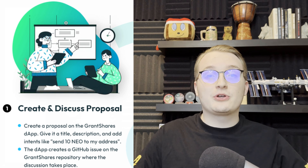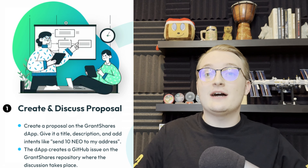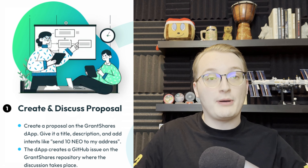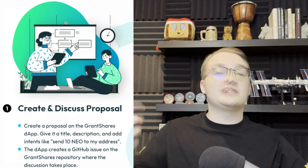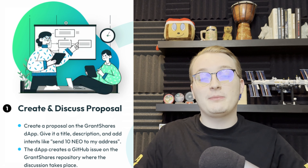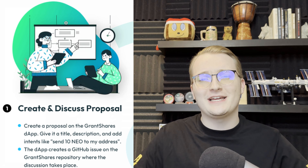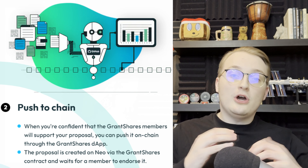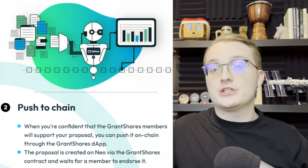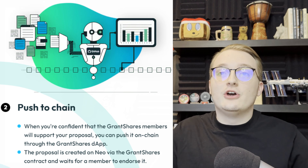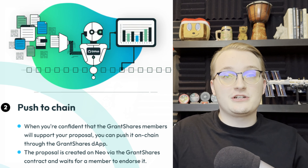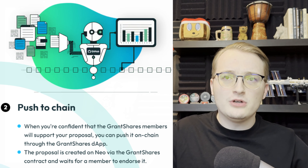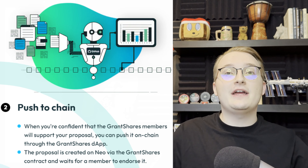Right now, the initial funding limit is $50,000 US per proposal. If there is a project seeking a larger amount, they can apply for grants through Neo's eco-support tracks. And the great thing about being a DAO is that everything here happens on-chain in a decentralized manner.